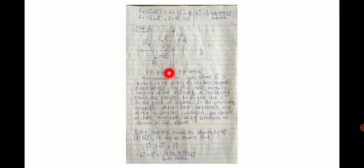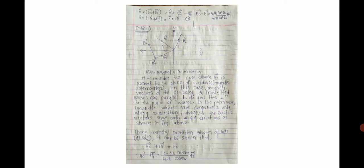These are the incident, transmitted, and reflected waves. Using boundary conditions — equations 8 and 9 — it can be shown that, similar to case 1 where we derived stepwise, in the previous video we showed the equation: E0 minus E1 = (k2·μ1·cosθ2) / (k0·μ2·cosθ0) · E2, and also E0 plus E1 = E2.